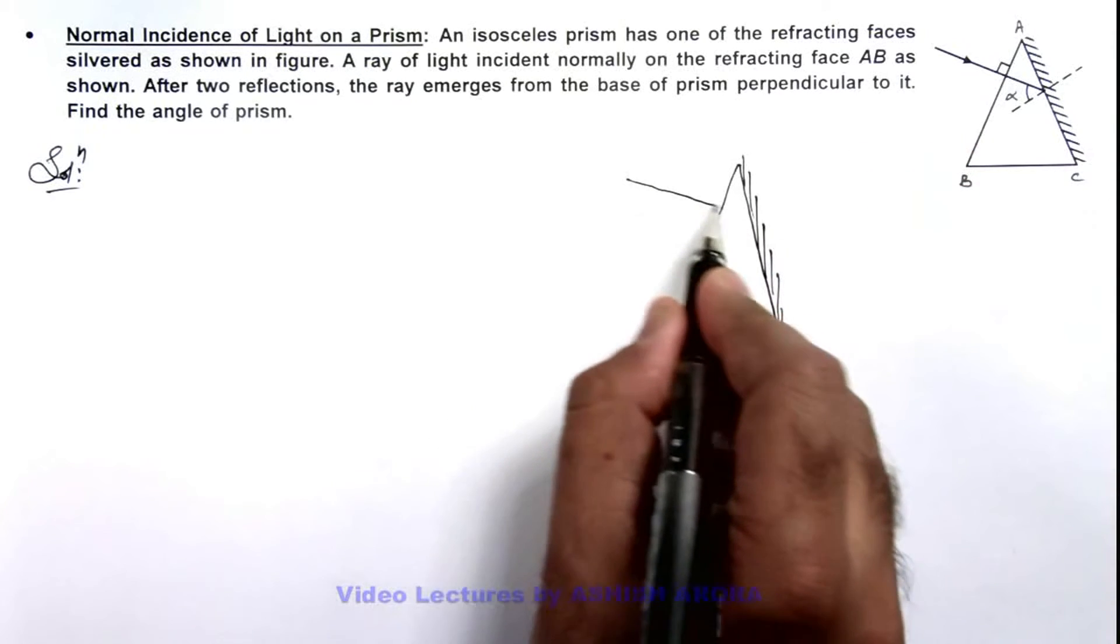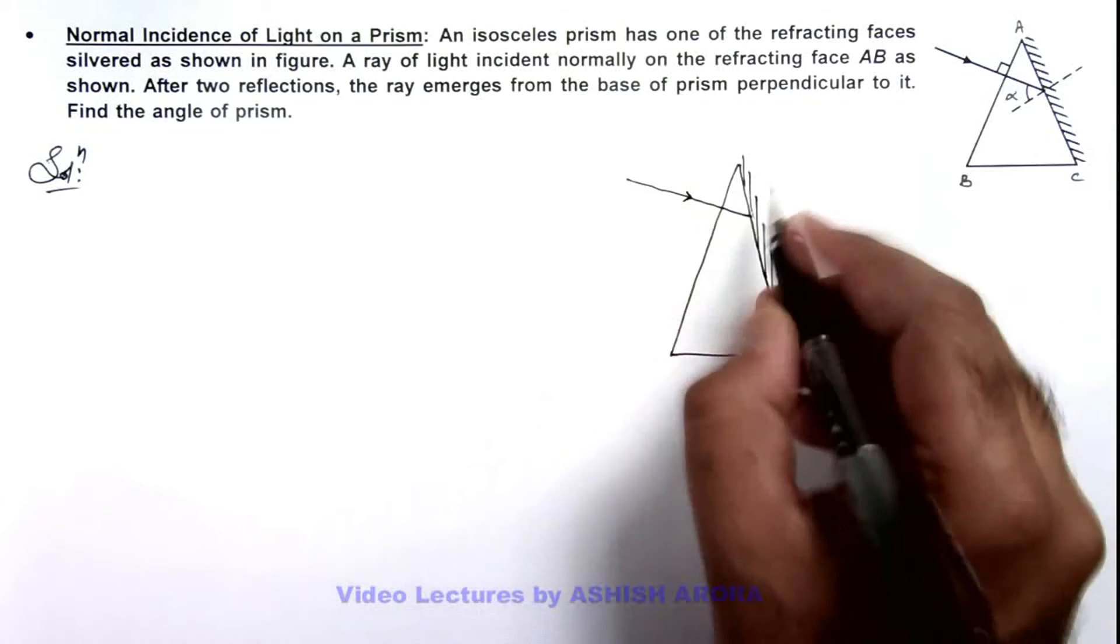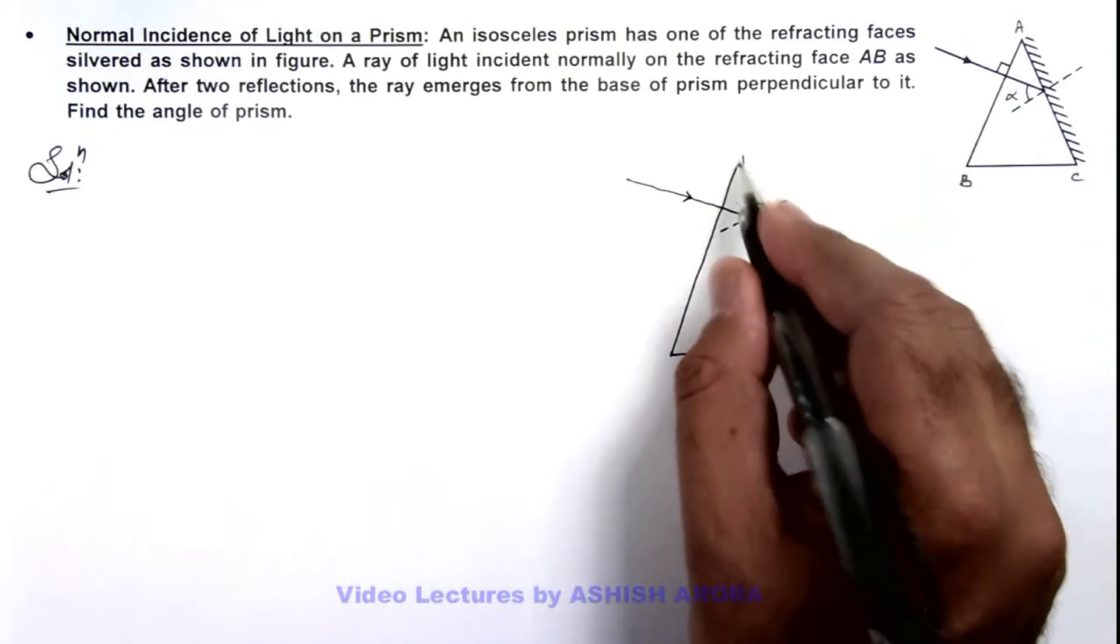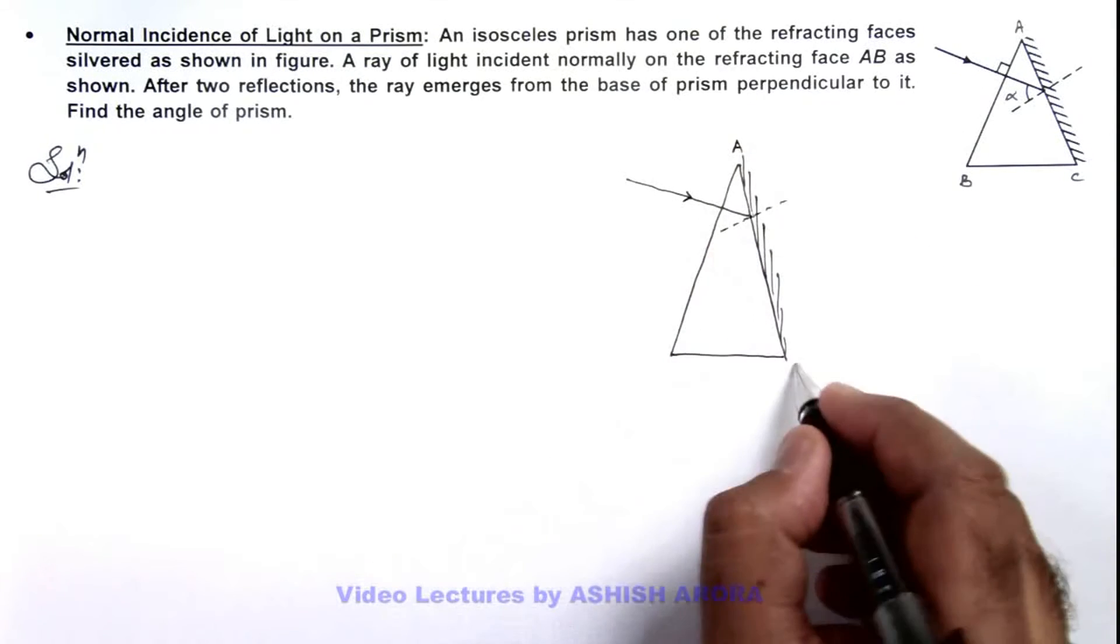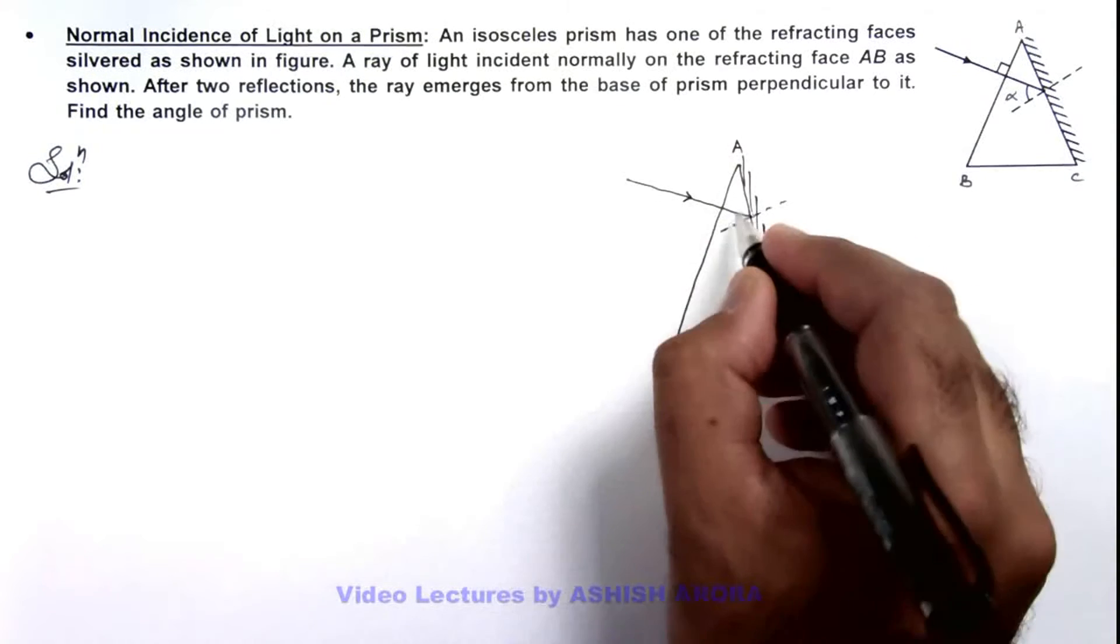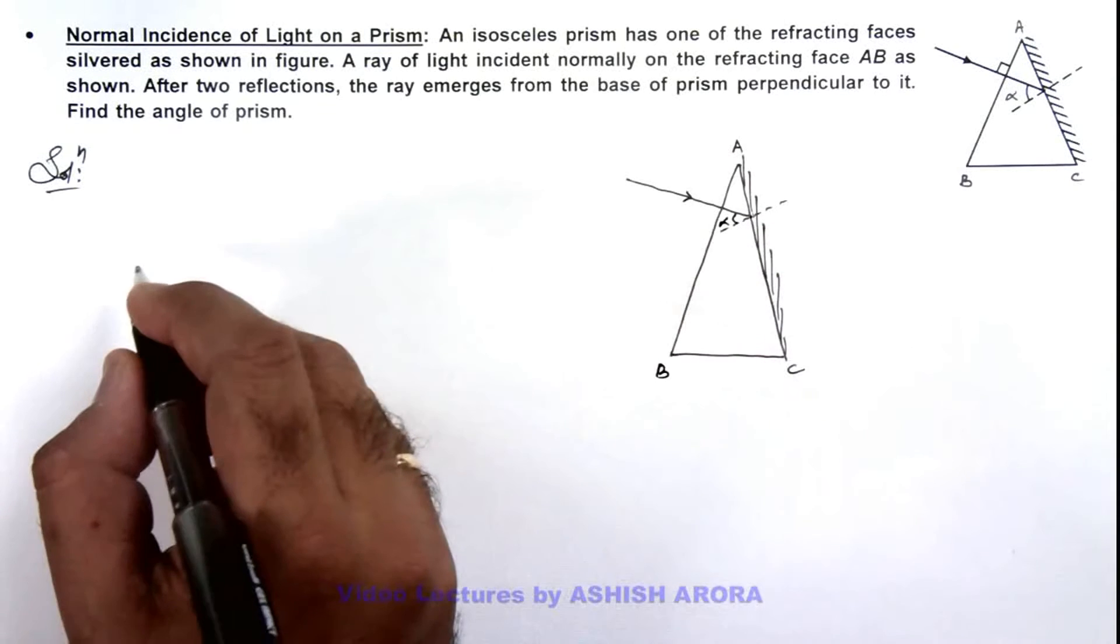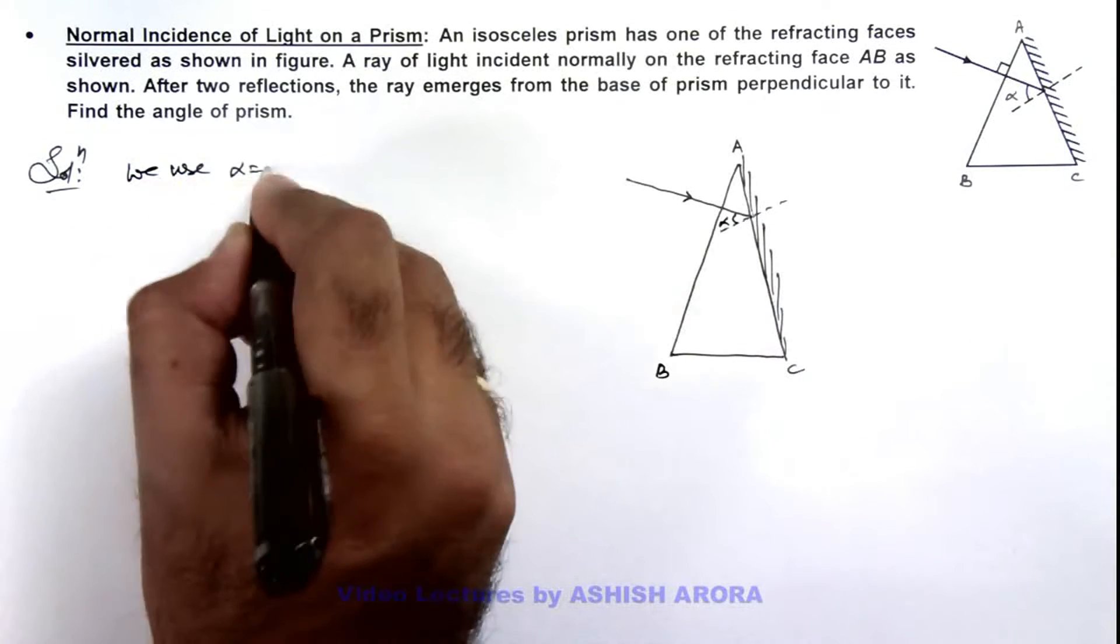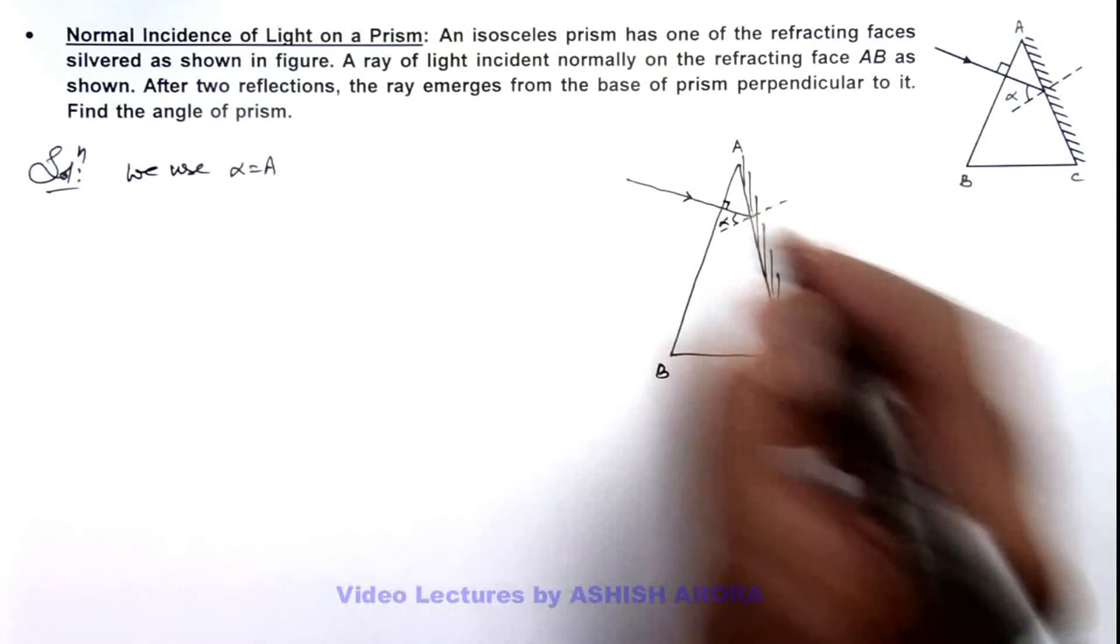On this face a light ray is incident normal to it, and here this is the normal for face AC on which the light is incident. If this angle is alpha, here we can write, we use alpha is equal to A because this angle is 90 degrees.